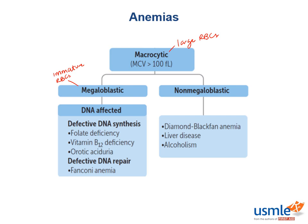There are also non-megaloblastic forms of macrocytic anemia — ones that don't form immature red blood cells. These include Diamond-Blackfan anemia, liver disease, and alcoholism. These are pretty low yield compared to folate and B12 deficiency, and folate and B12 deficiency is actually where you should expect to get most of your questions on macrocytic anemias.